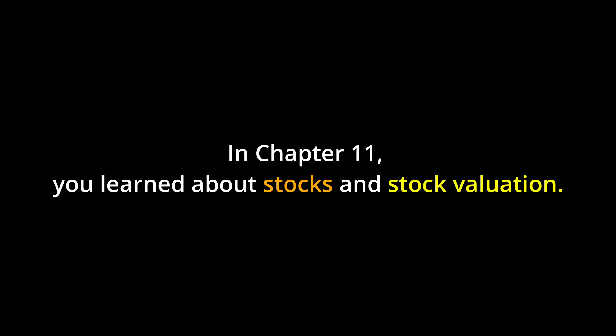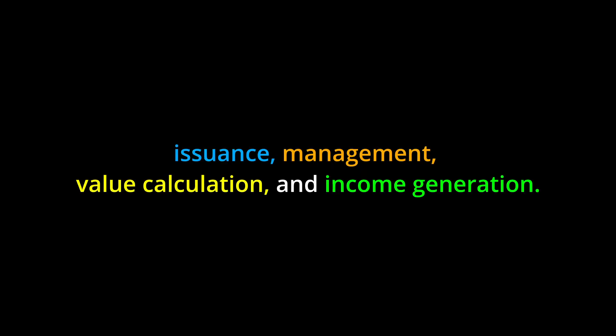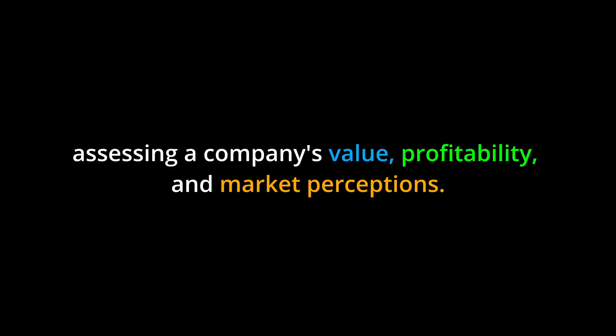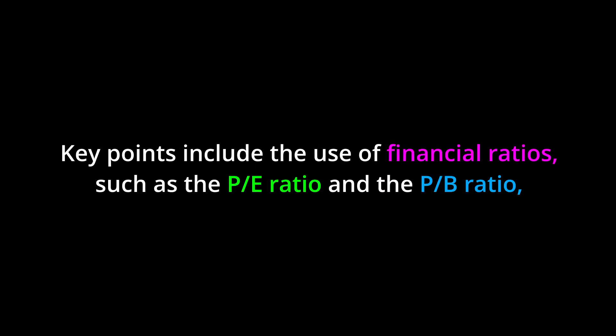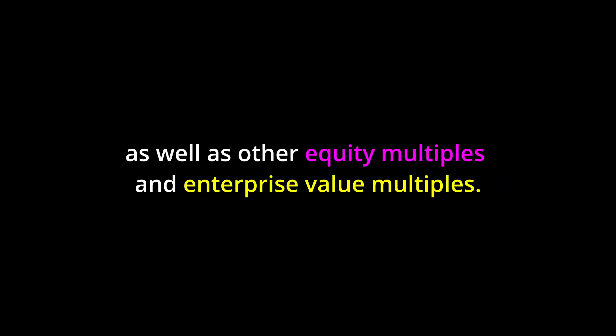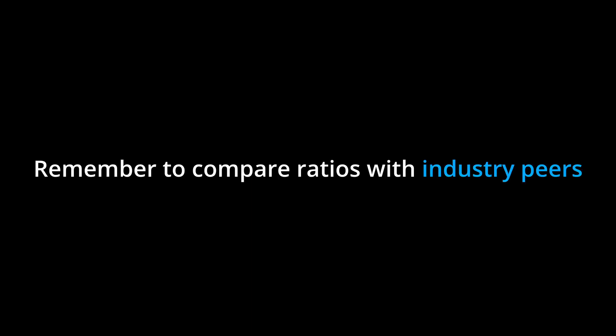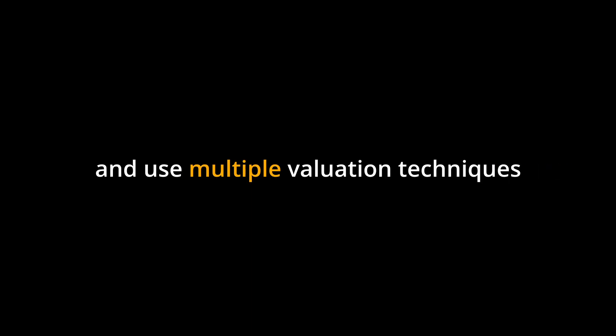Conclusion: In Chapter 11, you learned about stocks and stock valuation. Stocks differ from bonds in terms of their issuance, management, value calculation, and income generation. Stock valuation is important for assessing a company's value, profitability, and market perceptions. Key concepts include the use of financial ratios such as the P/E ratio and the P/B ratio, as well as other equity multiples and enterprise value multiples. By understanding these concepts and applying valuation metrics, you can make informed investment decisions. Remember to compare ratios with industry peers and use multiple valuation techniques to assess potential value and risks.